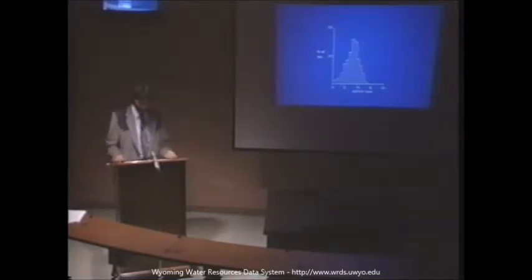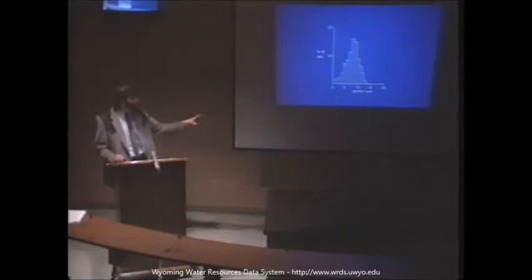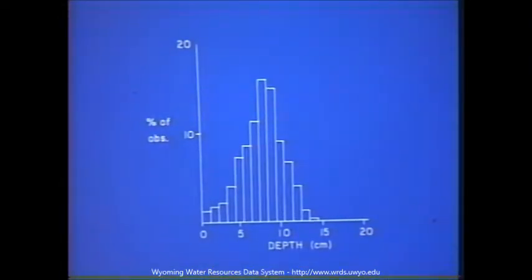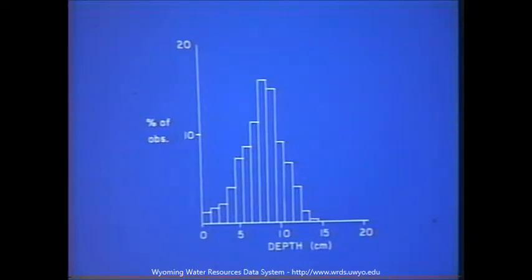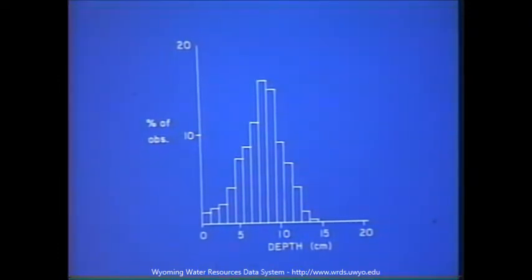What are habitat models? Very simply, they are a graphical representation of habitat being used by cutthroat or by any fish species. The variable in this example is depth in centimeters, ranging from 0 to 20 centimeters. The y-axis shows the percent of fry that we saw at a given depth. This habitat model tells us that fry generally were found to use depths between about 4 and 12 centimeters. It also tells us that shallower depths — 0 to 3 centimeters — and deeper water, greater than 13 centimeters, probably isn't used if it's available at this site.